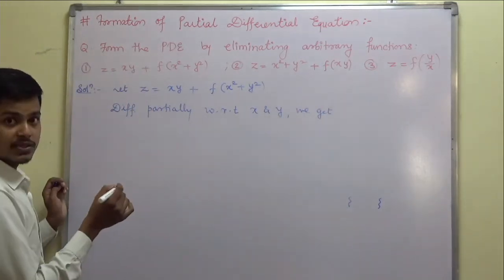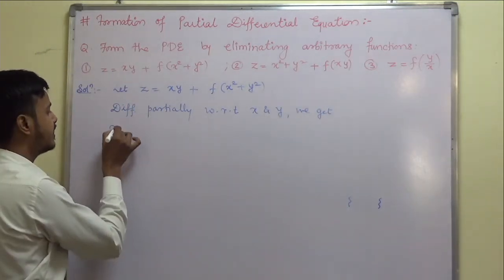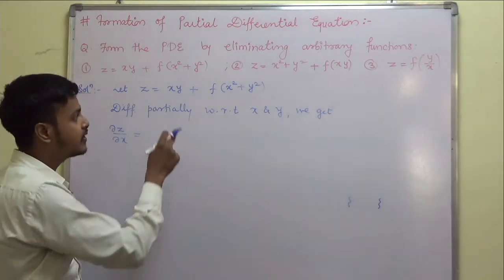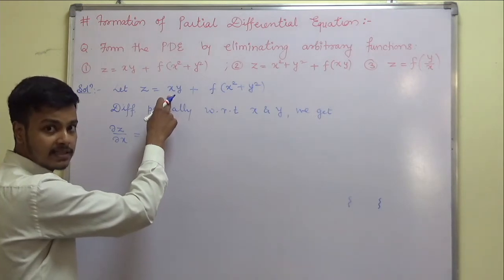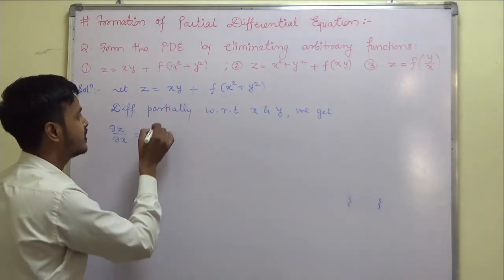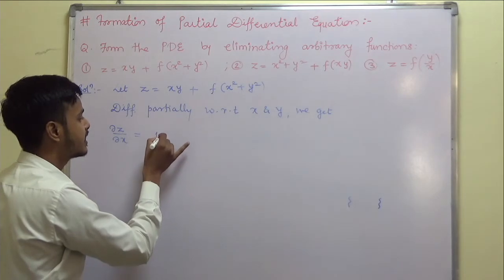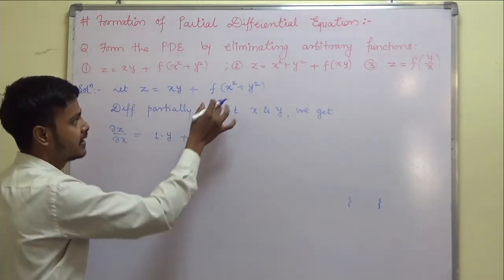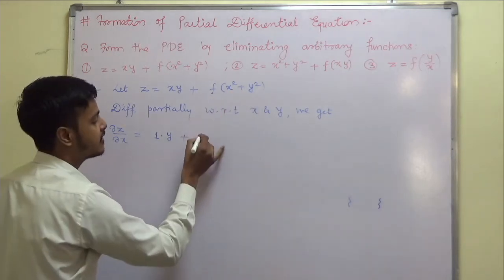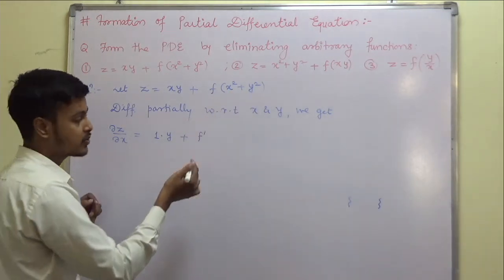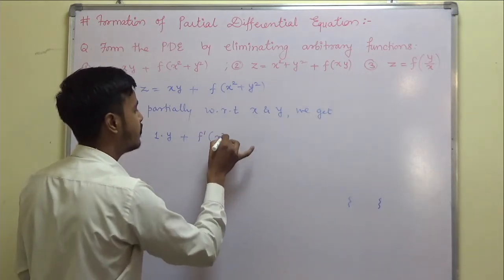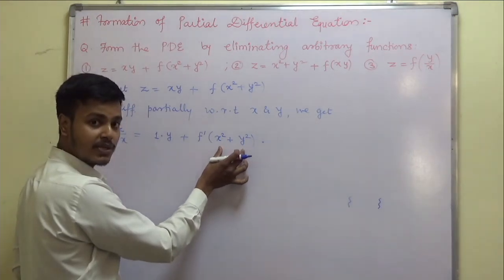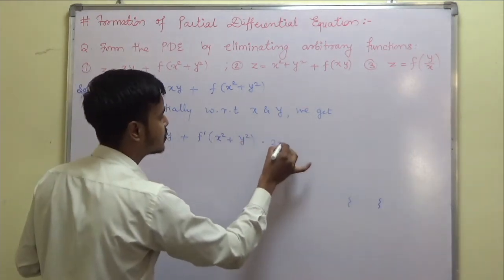Now, del z by del x is equal to the derivative with respect to x keeping y constant. The derivative of x is 1, keeping y constant as it is, plus the derivative of this function with respect to x. This involves both x and y, so I take f prime of x squared plus y squared, multiplied by the derivative of x squared plus y squared with respect to x, which is 2x.